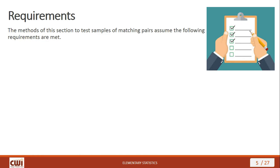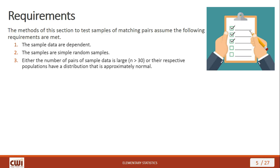Our methodology has certain assumptions. First, the sample data are dependent — a common-sense requirement. Second, samples are simple random samples. Third, we either have enough data to apply the Central Limit Theorem, or the populations we're sampling from are approximately normal, so there's normality underlying the distribution.